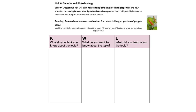First, open the paper that your teacher has prepared for you on Unit 6, Genetics and Biotechnology, and your paper should look like this. On the top of your paper, you always have the lesson objective that is visible for you. The objective is: you are going to learn how certain plants have medicinal properties and how scientists can study plants to identify molecules and compounds that could possibly be used in medicines and drugs to treat diseases such as cancer.